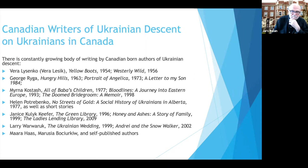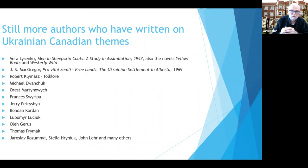More people who wrote historical and scholarly works include a long list: Robert Klimash, Michael Ivanchuk, a former teacher who produced a whole string of books on Ukrainians in Manitoba. Oris Martinovich authored two histories of Ukrainians in Canada — one on the pioneer period, one on the interwar period. Francis Swaripa has written several books about Ukrainians. Jerry Patryshin, Bukhtan Kordan, Yuba Merluchuk, Thomas Primack, Jaroslav Rozumny, Stella Hrinyuk, John Lair, and many others. There is a very extensive body of published work that you can draw on in doing your research.